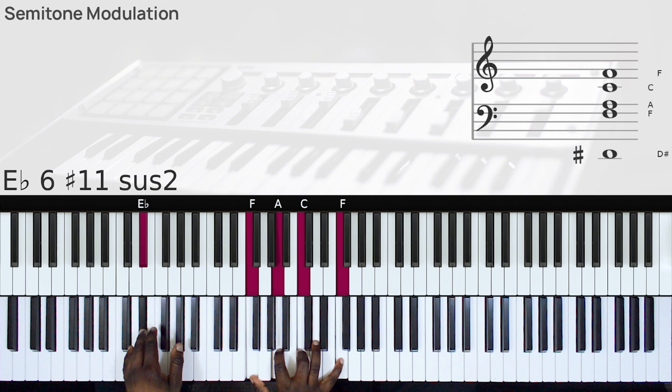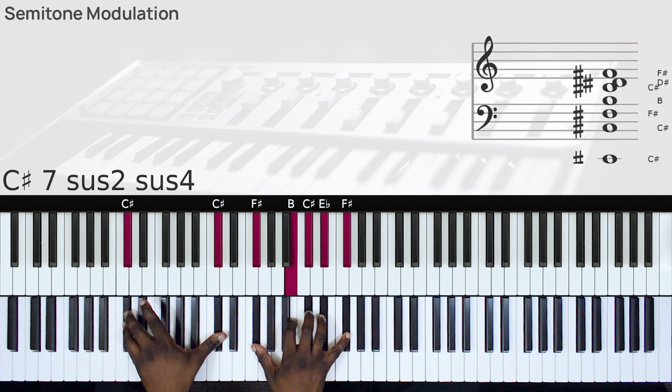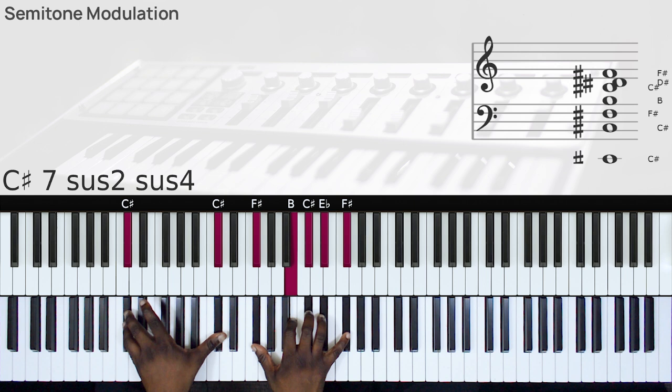Okay, do the b7 and then we do a chord 5 in the next key. And then you can do a 6-7-1.